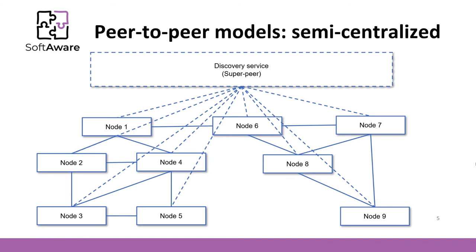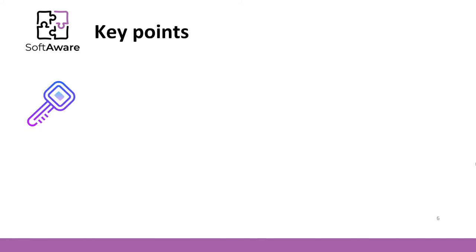Their role is to distribute work to other nodes and to collocate and check the results of a computation. The fundamental difference between the two approaches is that one prioritizes robustness while the other prioritizes efficiency. A decentralized approach tends to be more robust — no single point of failure — but it is usually tricky to make it as efficient as a semi-centralized approach.